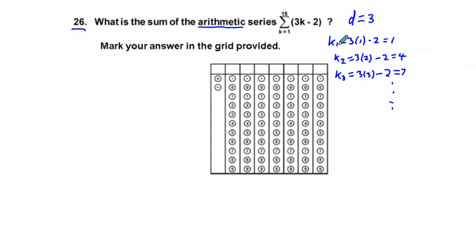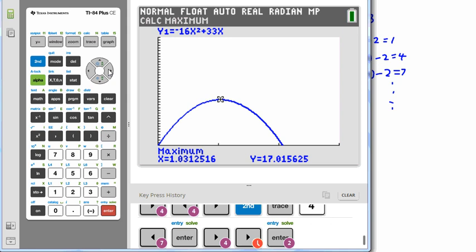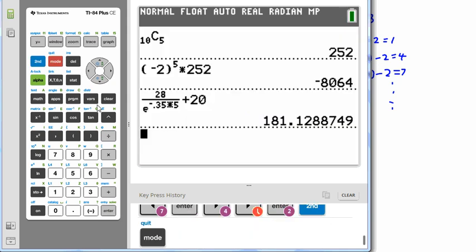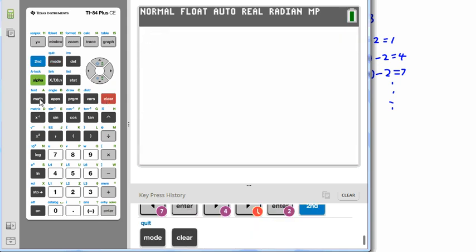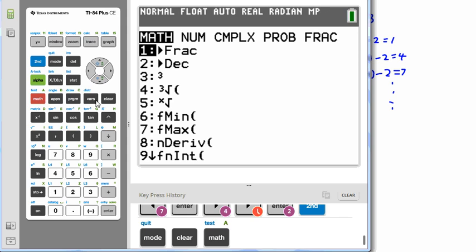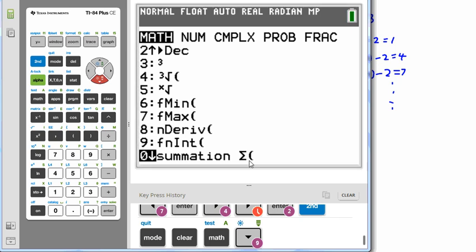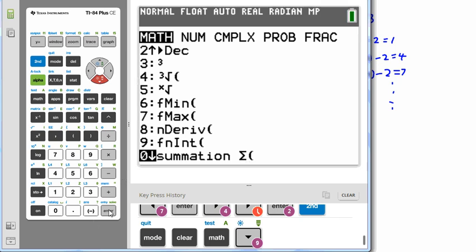But there is a function in your calculator that will take care of this. And the TI-84 series calculator, this is where it is. If we go to math and we go down to zero, summation. See that little summation symbol? We press that.